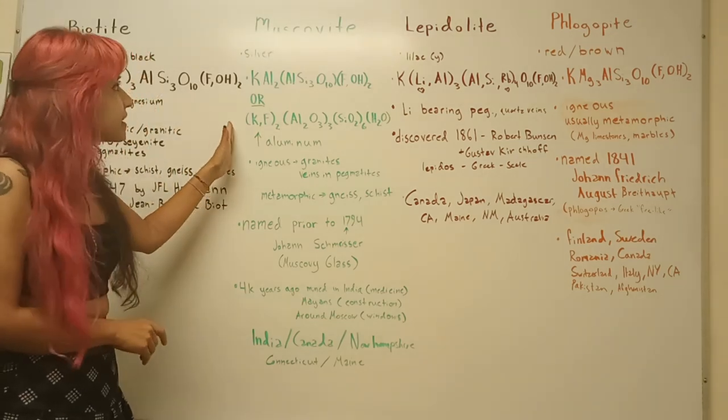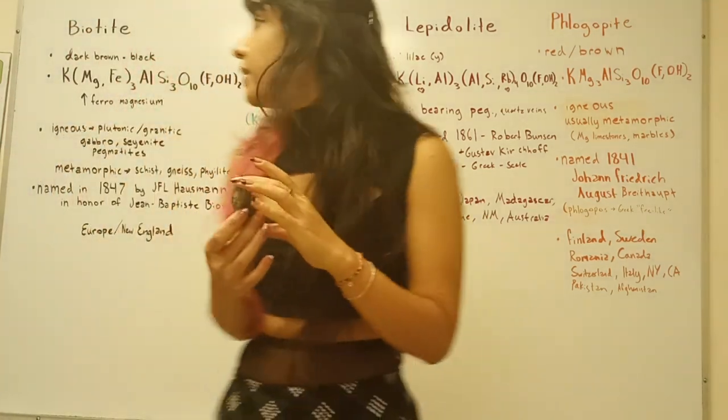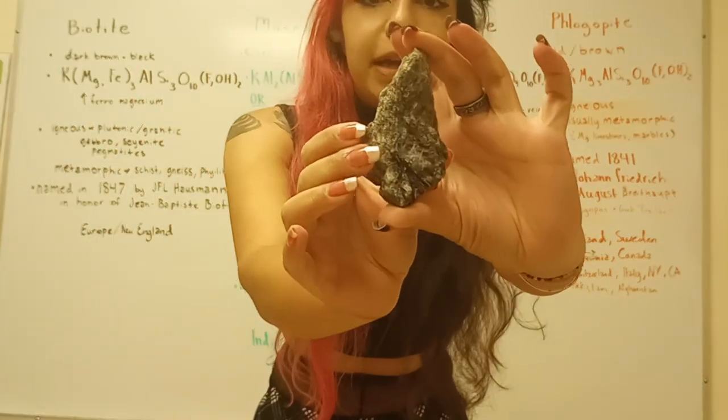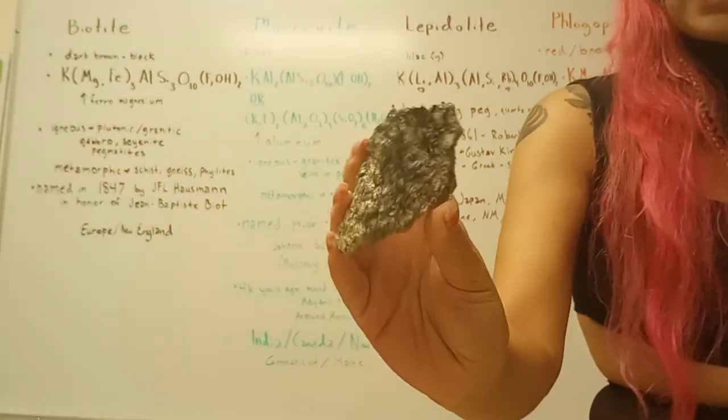For muscovite, let me pause real quick and show you a piece of our biotite mica. So you can see it's got that dark coloration.